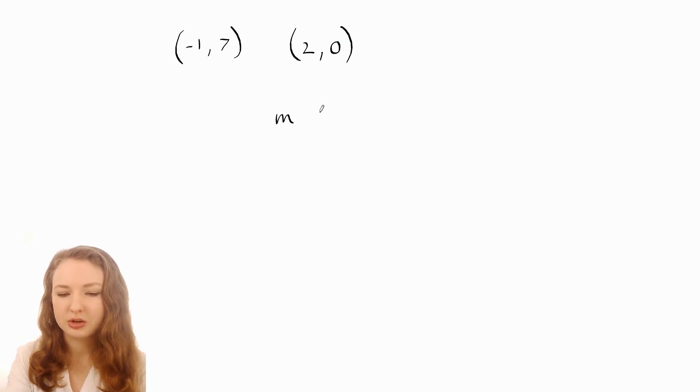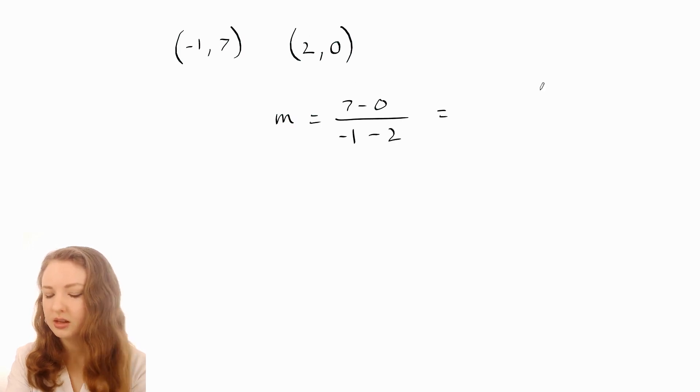The first thing we need to do is work out the rise. That's either seven minus zero or zero minus seven. I'll do seven minus zero. Then for the run on the bottom, if I did seven first, I have to do the negative one first. So negative one minus two makes seven over negative three.